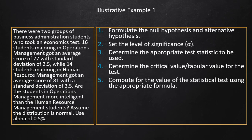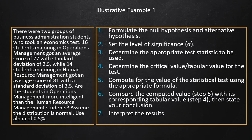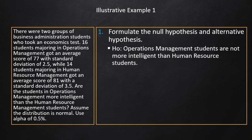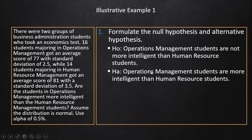We will follow the same seven steps. If you are not familiar with these steps, go back to the first video presentation. Step 1: Formulate the null and alternative hypotheses. Null hypothesis: operations management students are not more intelligent than human resource students. Alternative hypothesis: operations management students are more intelligent than human resource students.